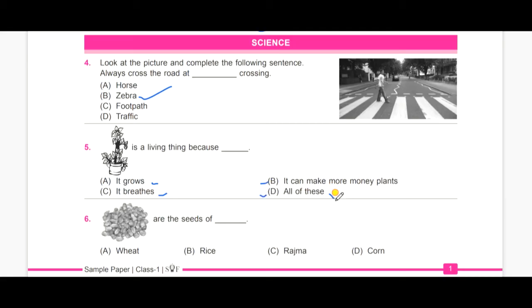The answer is all of this because the plant here is a money plant and it can grow, it can also produce more money plants and it can also breathe. So, the answer is all of this.